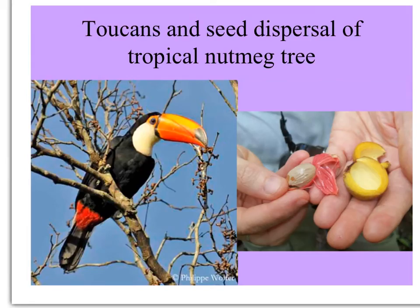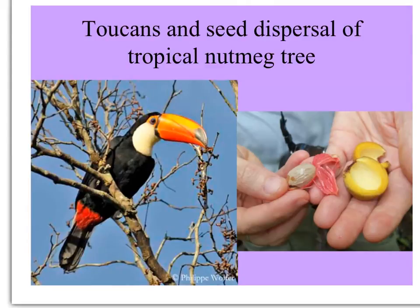Another dispersive mutualism is animals that eat fruits of flowering plants or gymnosperms and disperse the seeds. Here's a toucan, which would disperse great distances the seeds of this tropical nutmeg tree. The nutmeg spice comes from the seed; the aril is the part the toucan likes to eat, and that's the part that makes the spice we know as mace.